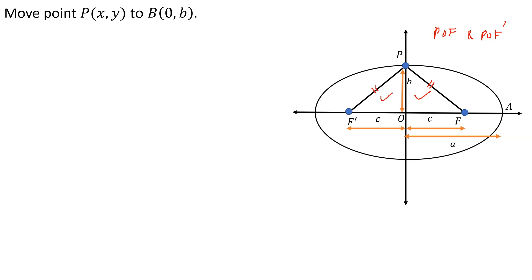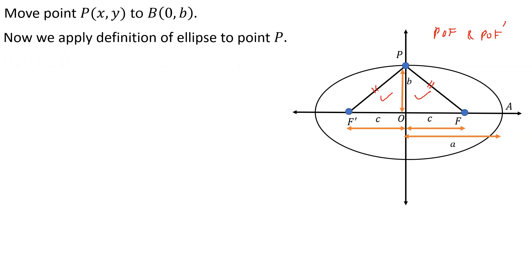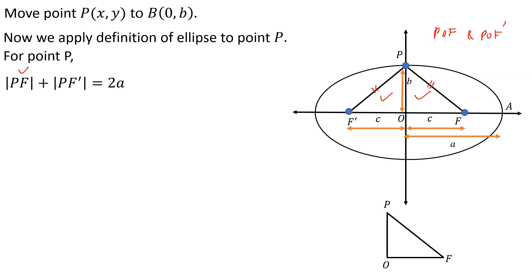Now we apply the definition of ellipse to the point P. Therefore, PF + PF' = 2a — the sum of these two distances is equal to 2a. Now we find the value of PF. For this we isolate triangle POF: OP = b, OF = c. We apply the Pythagorean theorem: h² = b² + c², therefore PF = √(b² + c²).